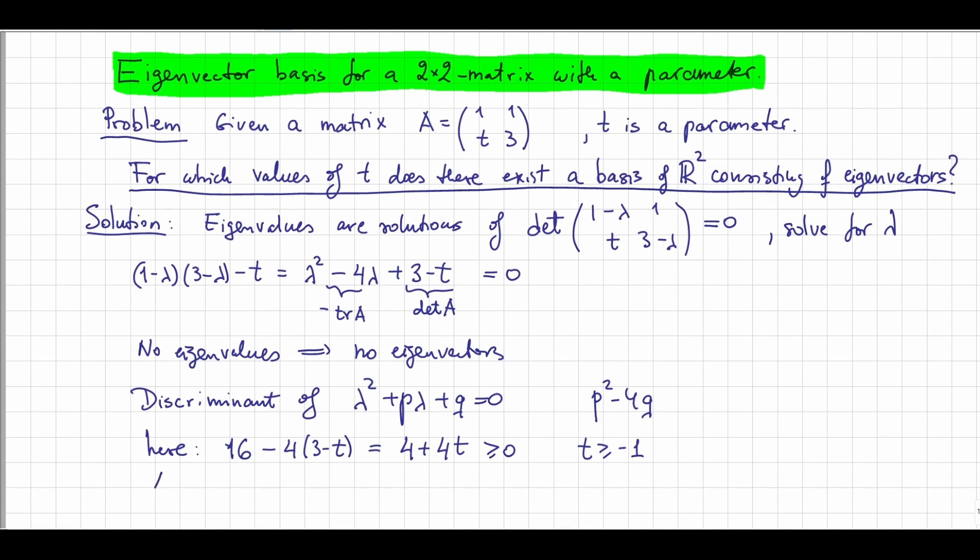So as the answer to this problem, we get that t has to be larger than -1. If t is less than -1, the quadratic equation does not have solutions: no eigenvalues, no eigenvectors, it doesn't work. If t is equal to -1, that doesn't work either because we have a double root and therefore only one eigenvalue.